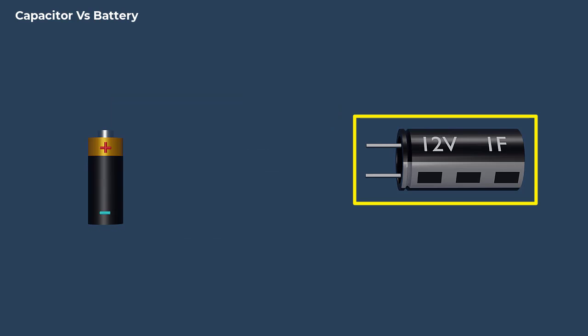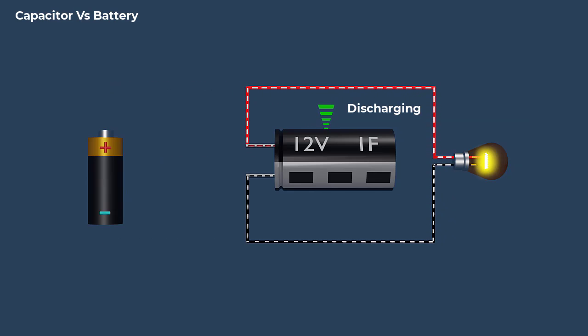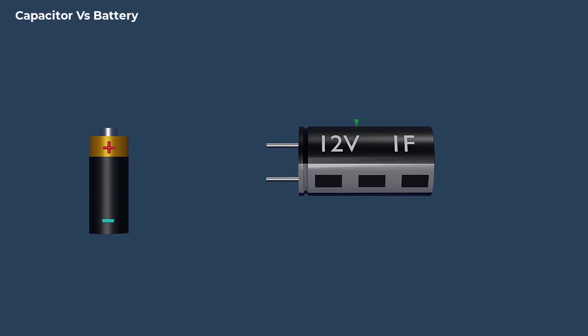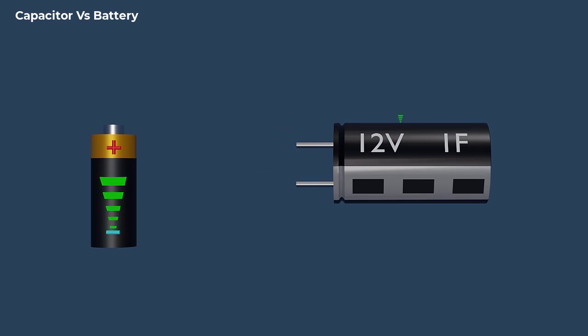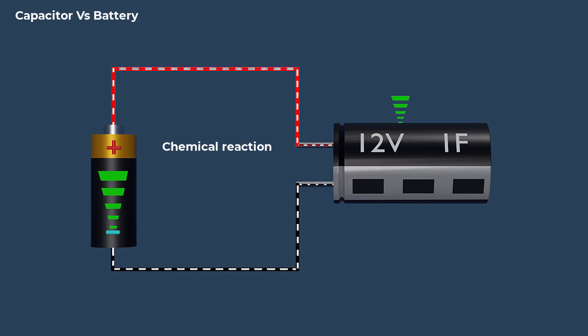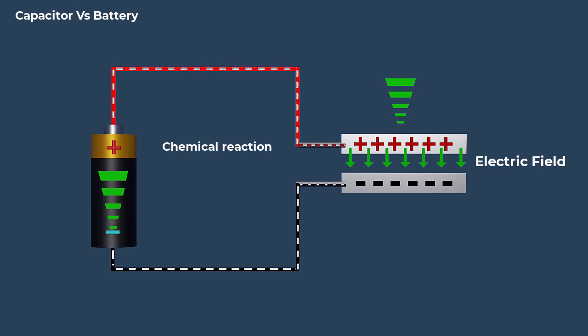Capacitors and batteries are both energy storage devices, but they store and release energy in different ways. Batteries store electrical energy through chemical reactions, while capacitors store electrical energy in an electric field.